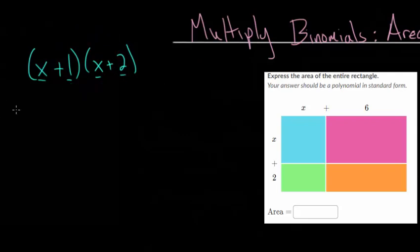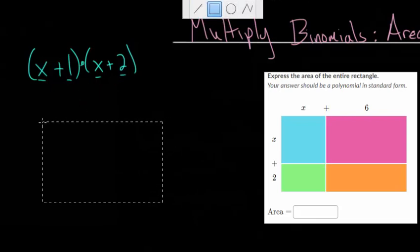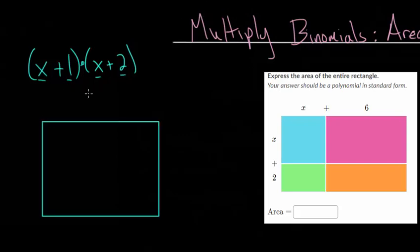But another way to think about these is using what's called an area model. Since we're multiplying these two ideas, and remember that if you had a rectangle, the area of this rectangle is going to be the length of the rectangle multiplied by the width. And so if we called this the length, and this is the width,